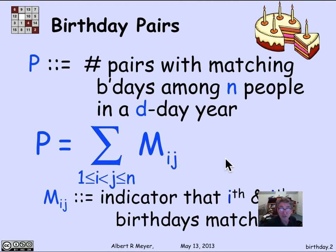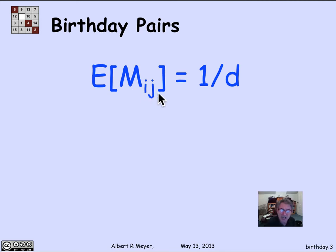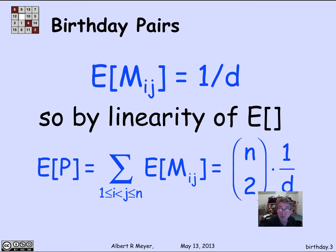The number of matching birthdays is the sum over all possible pairs of people of whether or not they have a matching birthday — the sum of these indicator variables Mij. The number of these indicator variables is n choose 2. If I look at the expectation of Mij: we're assuming all birthdays are equally likely, so whatever the i-th person's birthday turns out to be, the j-th person has a uniform probability — one chance in D — of matching it. So E[Mij] = 1/D, and by linearity of expectation, the expected number of pairs is n choose 2 times 1/D.